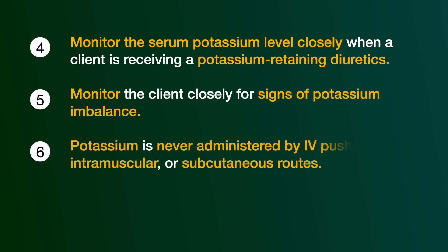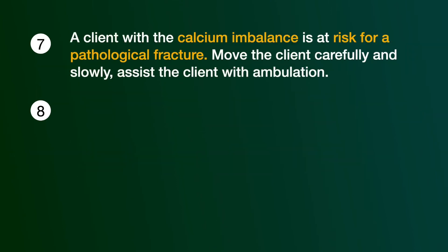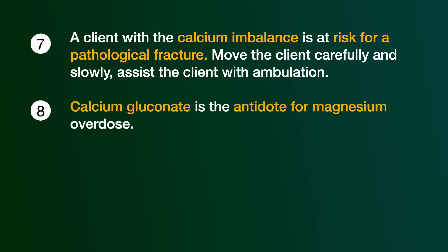Point 6: Potassium is never administered by IV push, intramuscular, or subcutaneous routes. IV potassium is always diluted and administered using an infusion device. Point 7: A client with a calcium imbalance is at risk for pathological fractures. Move the client carefully and slowly, and assist the client with ambulation. Point 8: Calcium gluconate is an antidote for magnesium overdose. When magnesium overdose and toxicity occurs, administer calcium gluconate as the antidote.